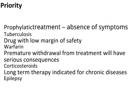Priority patients include those taking prophylaxis medicine or those with absent symptoms, like tuberculosis patients who often fail to continue treatment after two weeks, which creates drug resistance. You should prioritize patients based on their disease and drug — drugs with low marginal safety or where premature withdrawal causes serious consequences, such as corticosteroids, or long-term therapy for conditions like epilepsy or diabetes, where patients may stop medication once they feel better.